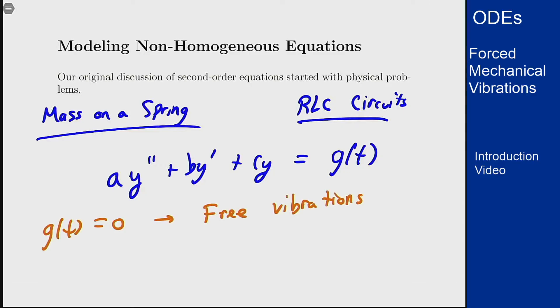Now I want to extend into forced vibrations, which means g(t) is not zero, and deal with solving non-homogeneous equations in this context and seeing how that relates to the physical systems these things are modeling. Why do we call it a forced vibration? It again comes from the mass on a spring analogy.